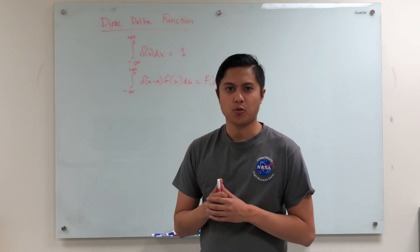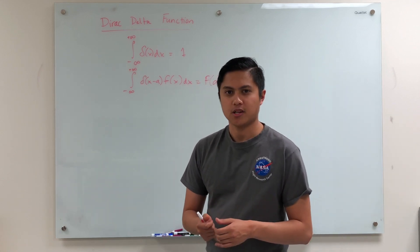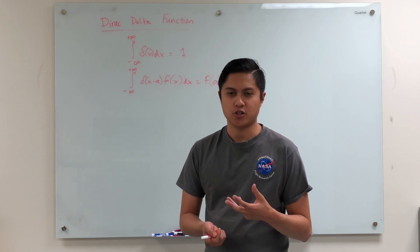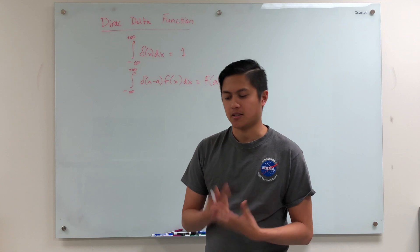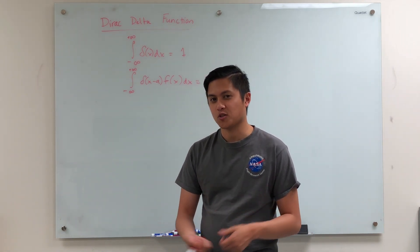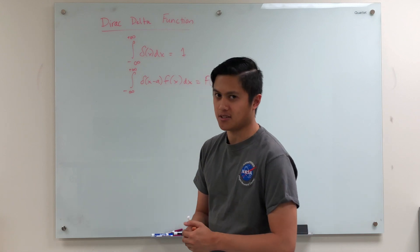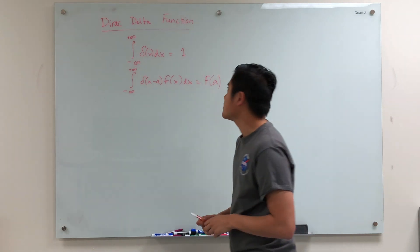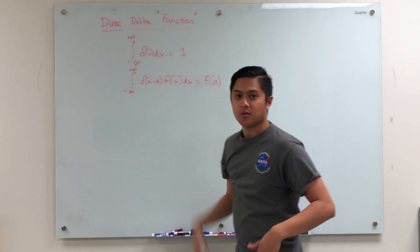Hey there, my fellow intellectuals. Today we're going to be going through a certain property of a Dirac-Delta function. For those of you who are unaware, the Dirac-Delta function is this function that you'll see a lot in quantum mechanics and electrodynamics as a physics major. It's not really a function — if you're a mathematician, you call it a distribution — but we're physicists, so we don't really care too much about the words, though technically you would put quotes around the word function.